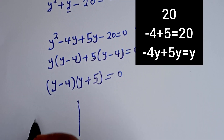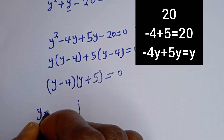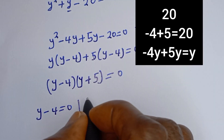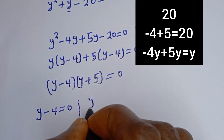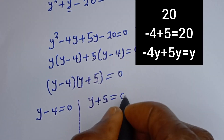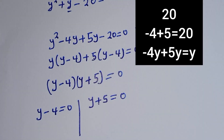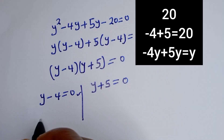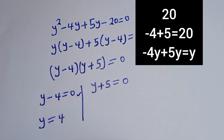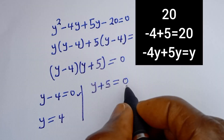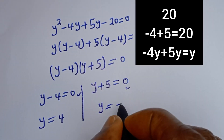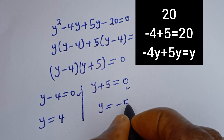There are two cases here. The first case is y minus 4 is equal to 0, and the second case is y plus 5 is equal to 0. From the first case, y is equal to 4, and from the second case, y is equal to minus 5.